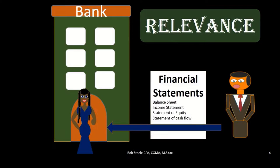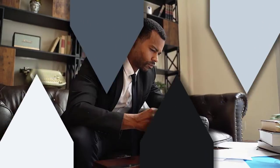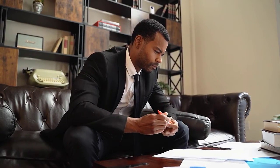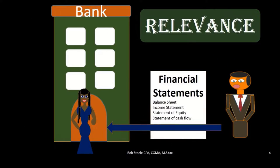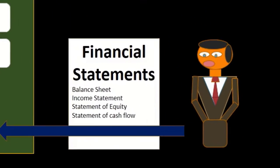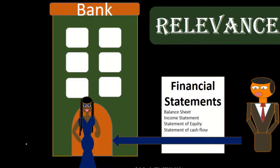The end users are going to be the external users — external users like investors, like a bank. In this case, we're going to be considering a bank. The scenario will be that the owner wants to get a loan from the bank.